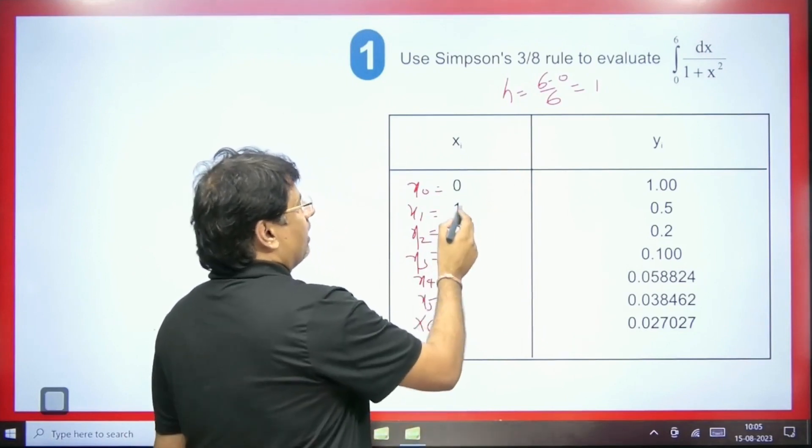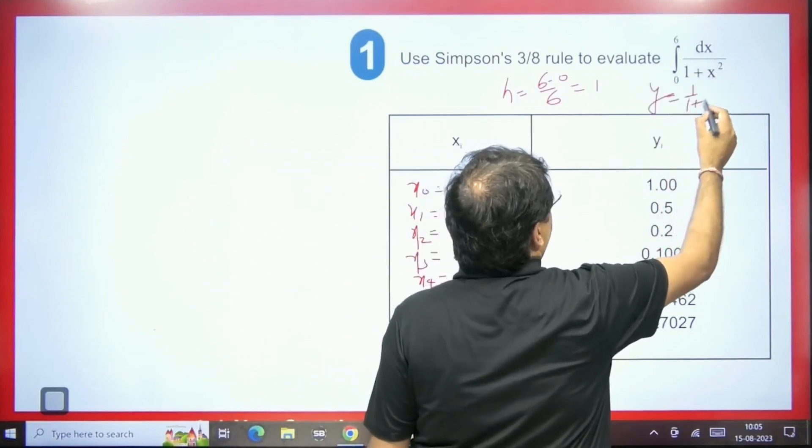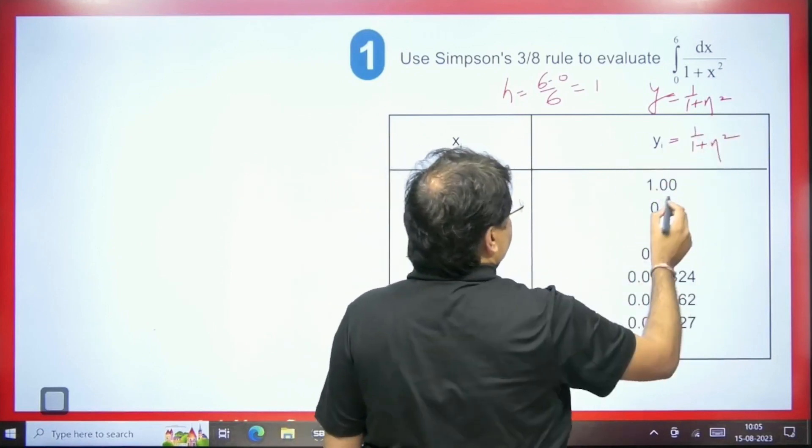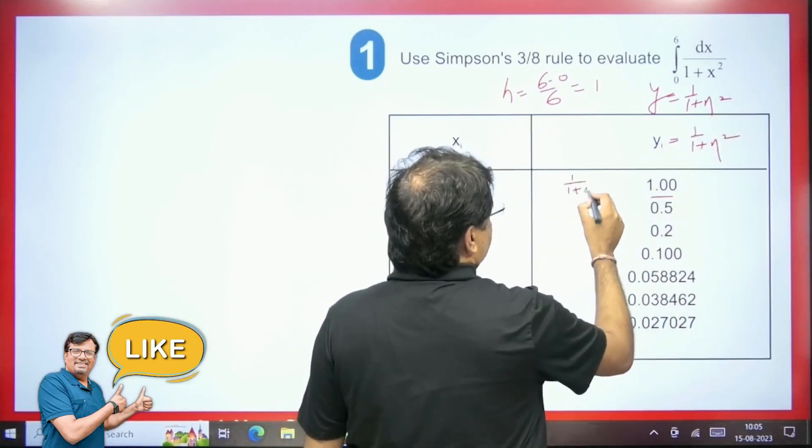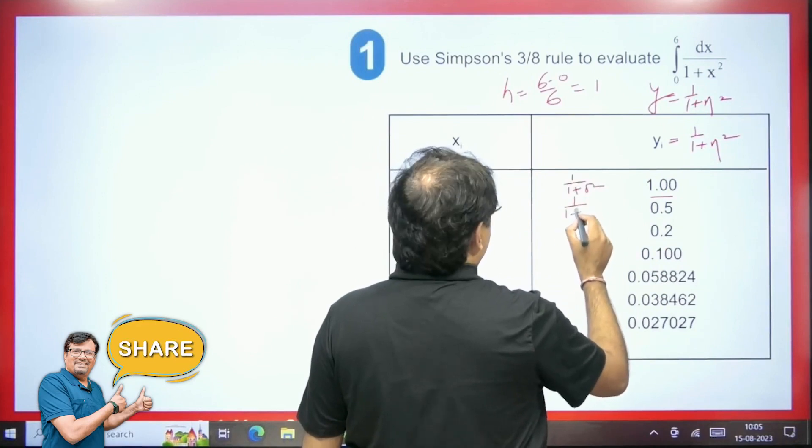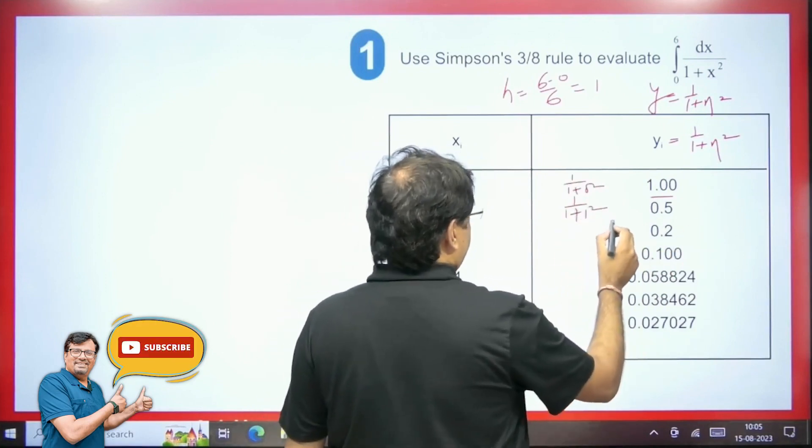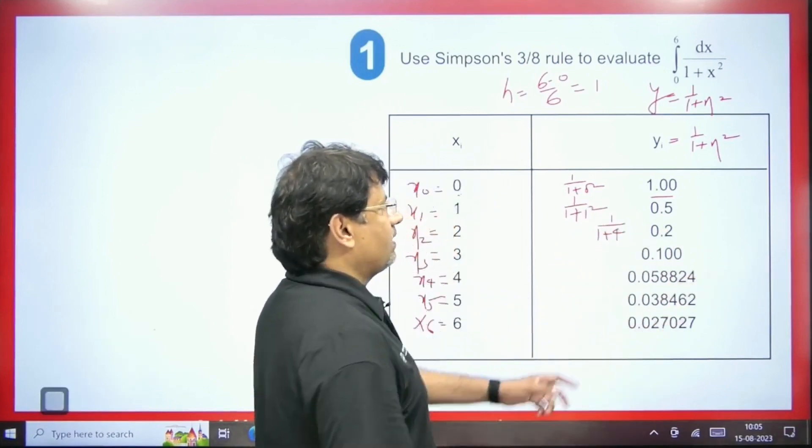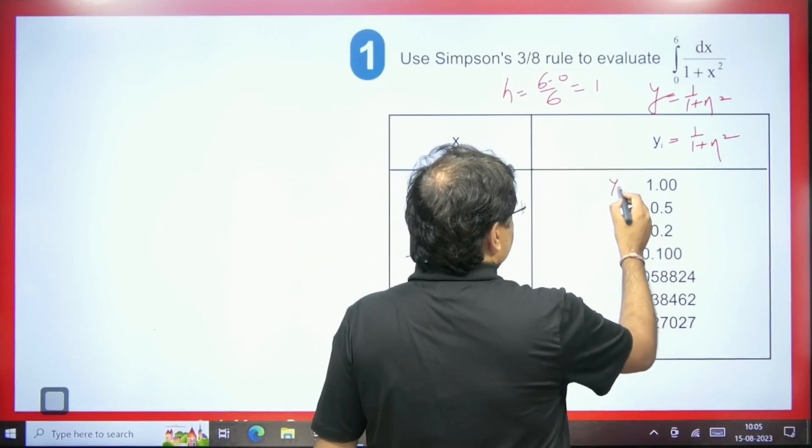And its corresponding will be this. The y we will get here is 1 upon 1 plus x square. So wherever you have x, put 0 there. Then we will put 1. So it would be 1 upon 1 plus 0 square, 1 upon 1 plus 1 square. So it will be 0.5. We will put it here. So 1 upon 1 plus 2 square is 4. So this will be 0.2. In this way, these values here, they will keep coming like this.